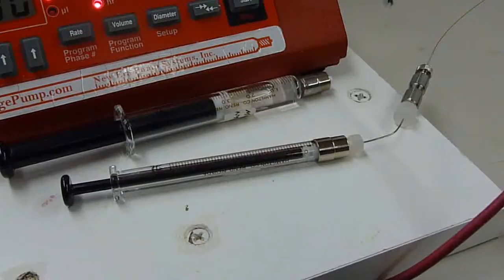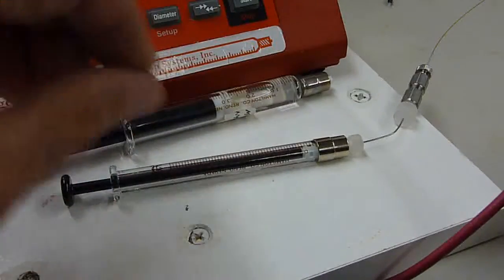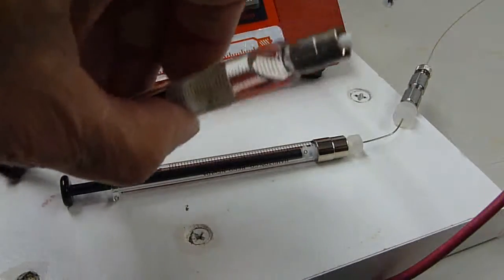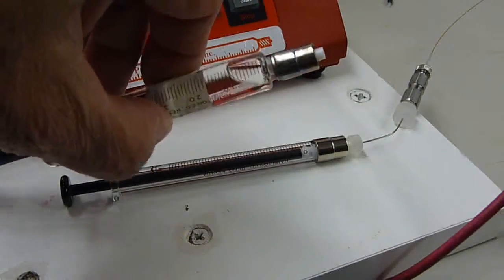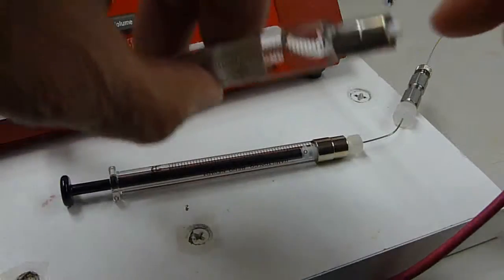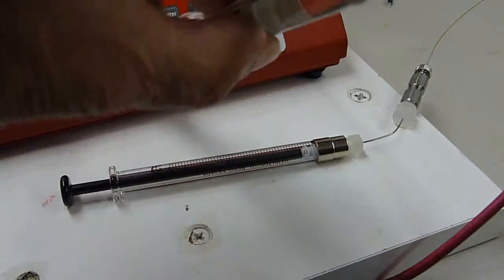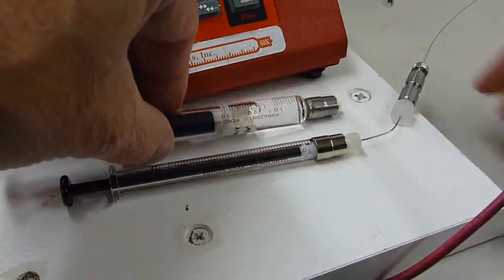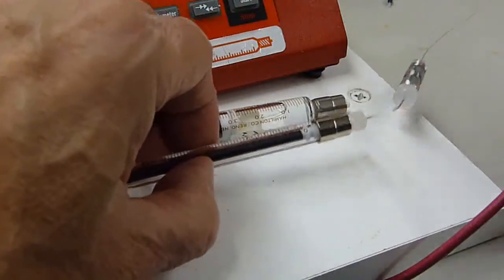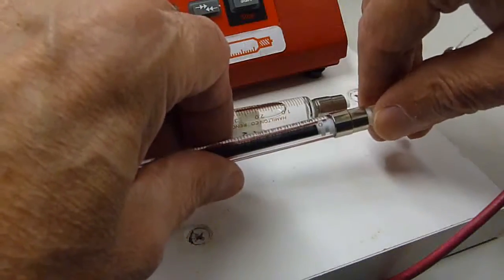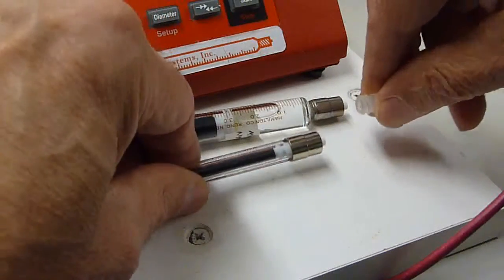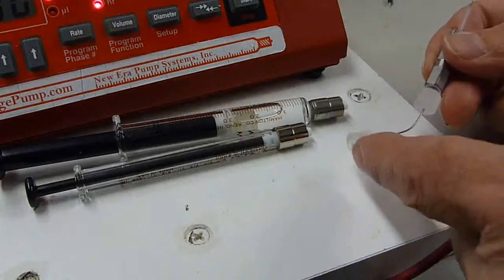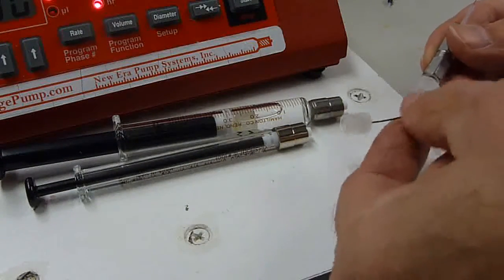For syringes and fittings, I like the luer lock taper Teflon inside. Like that, for the syringe. This set up here has a Kalef hub needle.